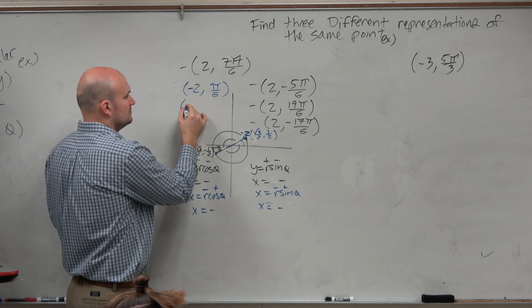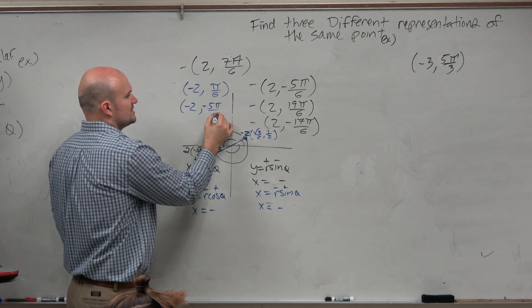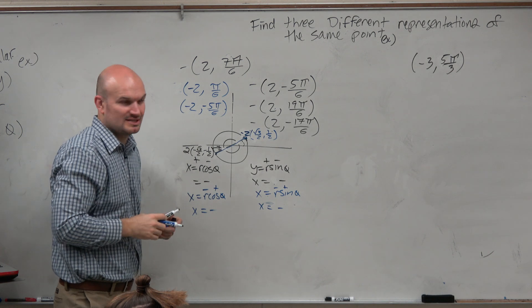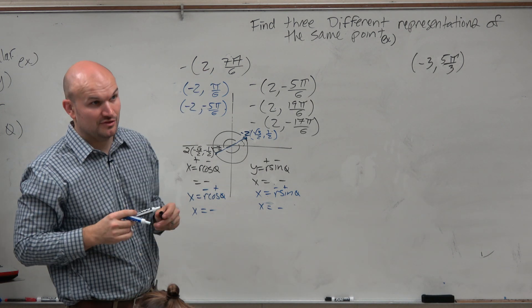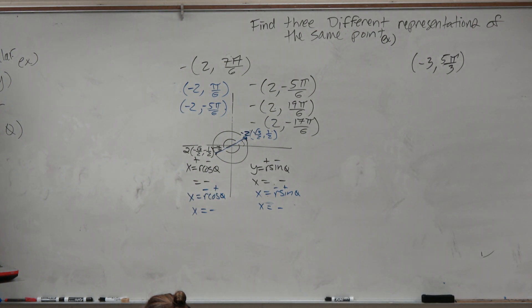And then another one you could do, you could do the negative version. Negative 5π over 6. So now you have 1, 2, 3, 4, 5 different representations I just gave you. And you only need to find 3. Now, some of you might be saying, okay, that kind of got a little confusing, a little weird. Like, let's look at another one.